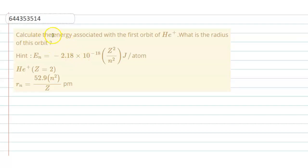The question is, calculate the energy associated with the first orbit of He+. What is the radius of this orbit? And this is the data which is given.